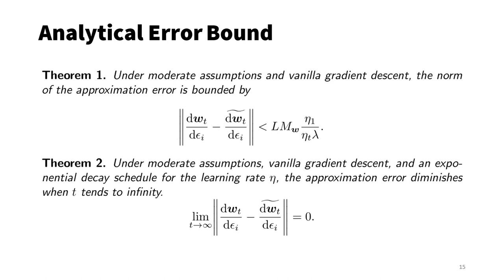The approximation does simplify computation, but how does it affect the accuracy of the derivative? We perform some theoretical analysis. Under some moderate conditions, we have proven that the approximation error is bounded. In addition, if the learning rate, eta t, decays exponentially, the approximation error diminishes as we spend more time in the optimization. For details of this proof, please refer to the supplemental material of the paper.